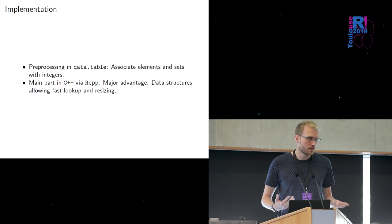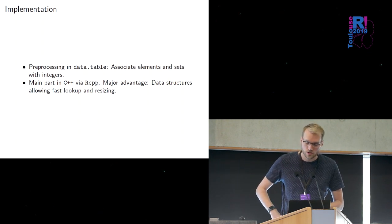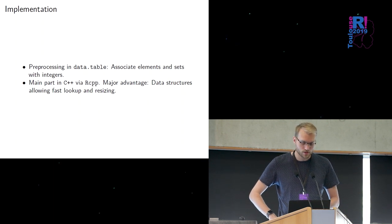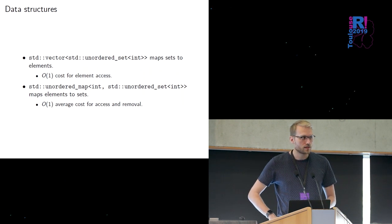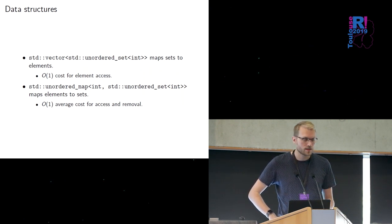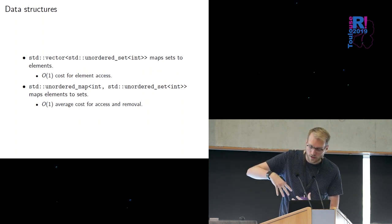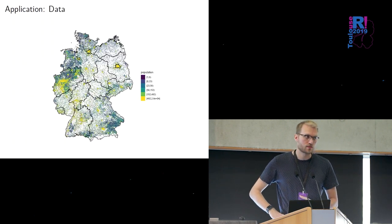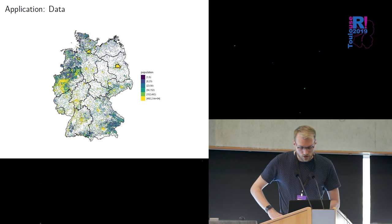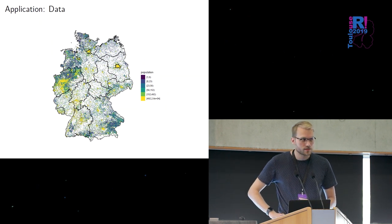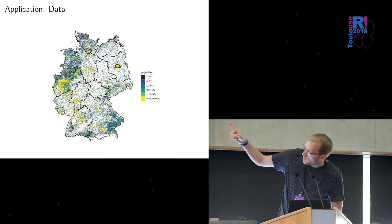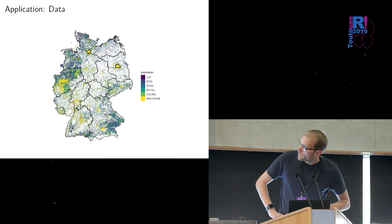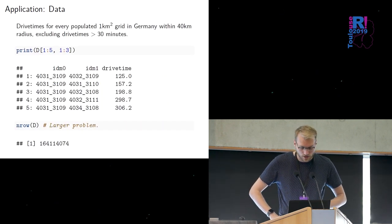So in this package we have a pre-processing step which we do in data.table currently where you just associate every set and every element with an integer so you can work with integers which is nicer and the main part is written in C++ and the nice thing is then you have data structures which give you dynamic objects because you have to resize and you have to do objects with strings efficiently which does not exist in R and the main workhorse are unordered sets for integers. Yeah just to show our application this is data which is based on this is grid data where every grid point is populated one kilometer grid in Germany where we have data on and we computed the drive times for all these sets which are a lot of drive times constrained to the drive times being less than 30 minutes.